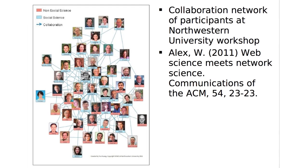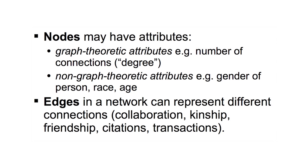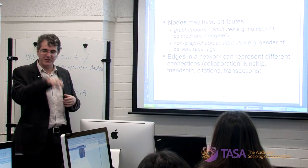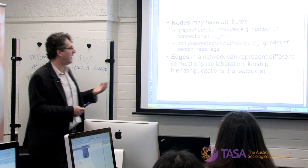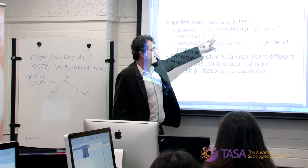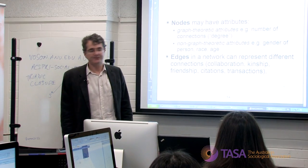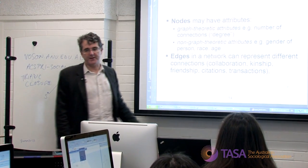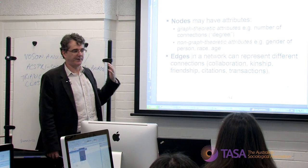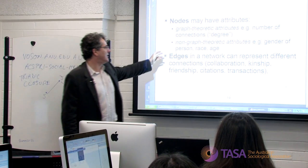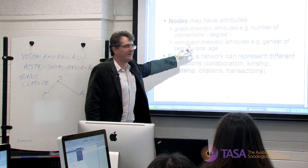In terms of further network terminology, nodes may have attributes of two types. Those related to the network are graph theoretic — derived from the person's position in the network — with degree (the number of connections you have) being a very common one. Attributes can also be non-graph theoretic, meaning they have nothing to do with the network and are intrinsic attributes of individuals, such as gender, race, or age.